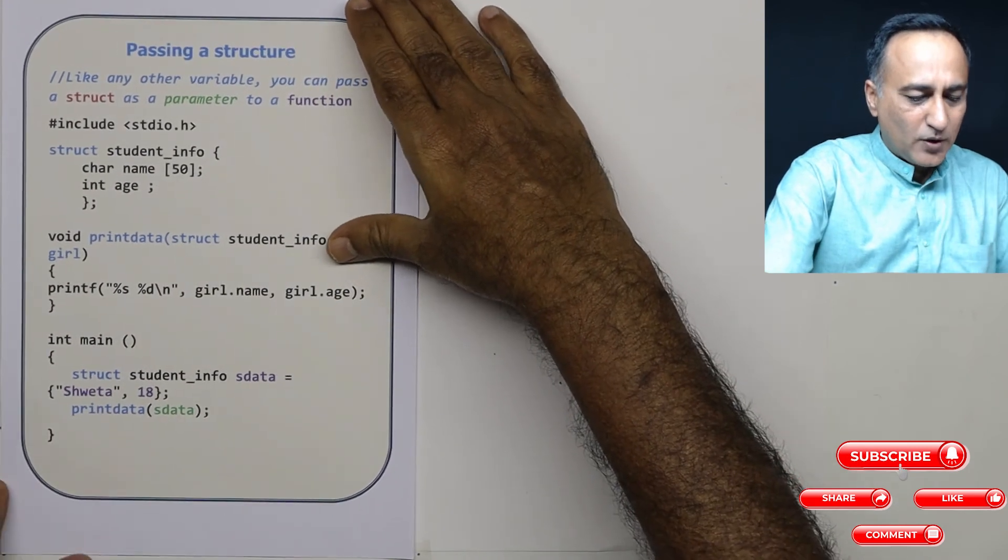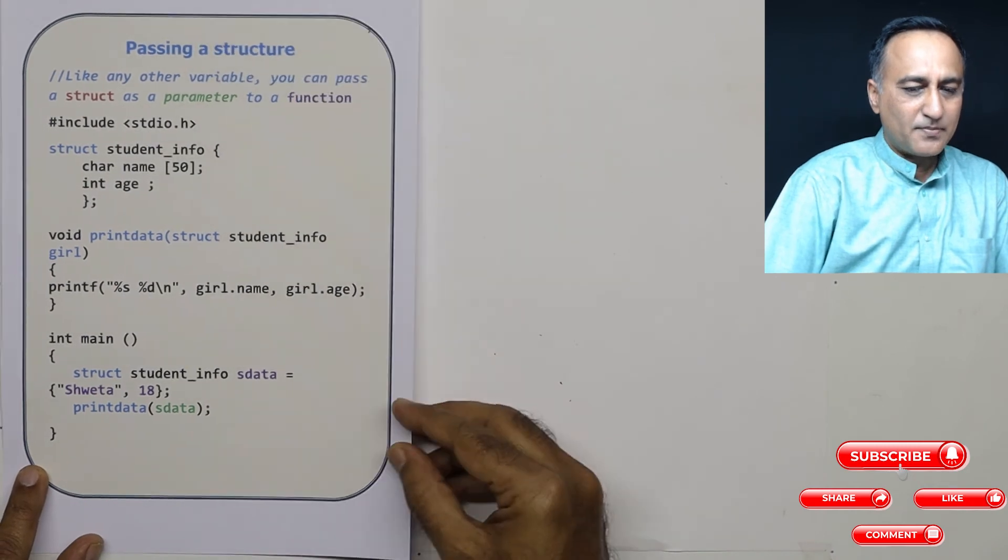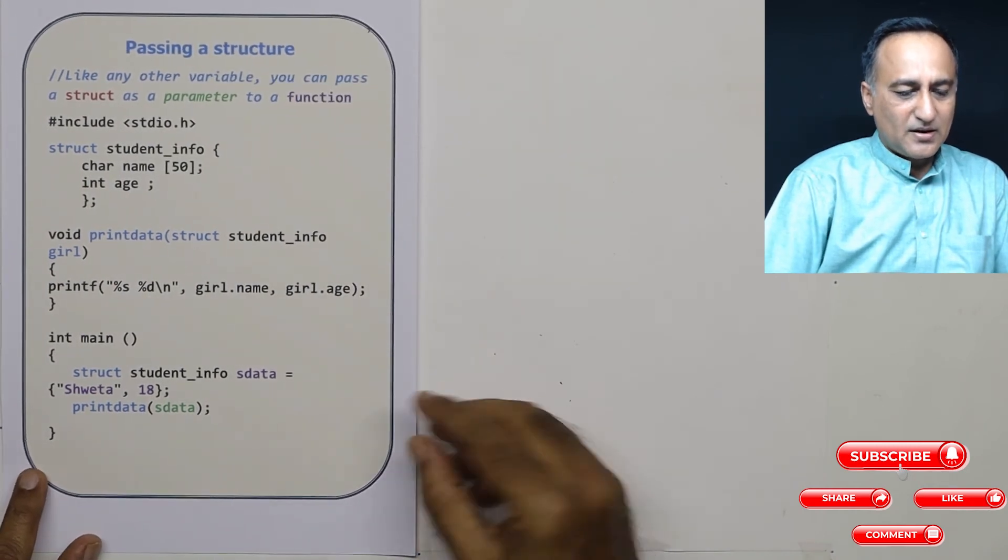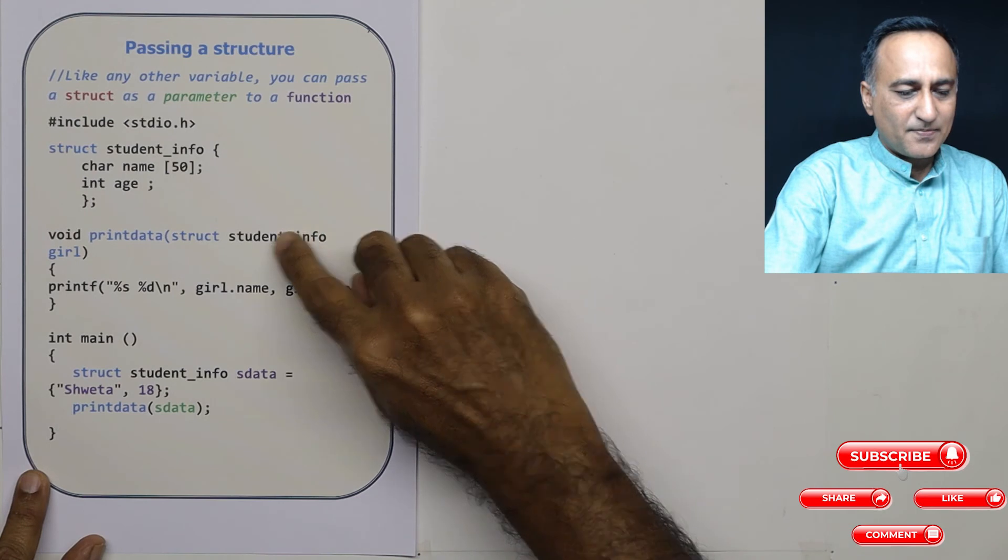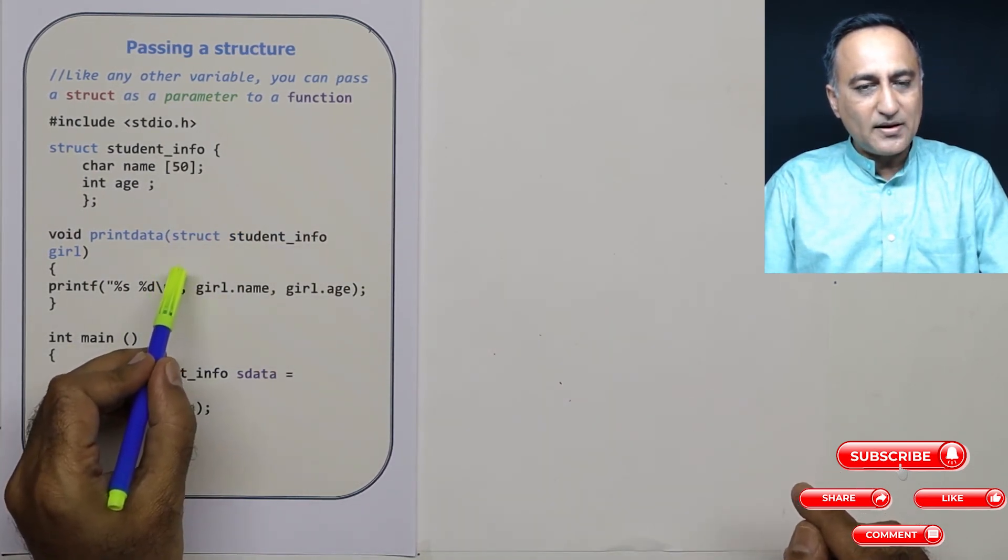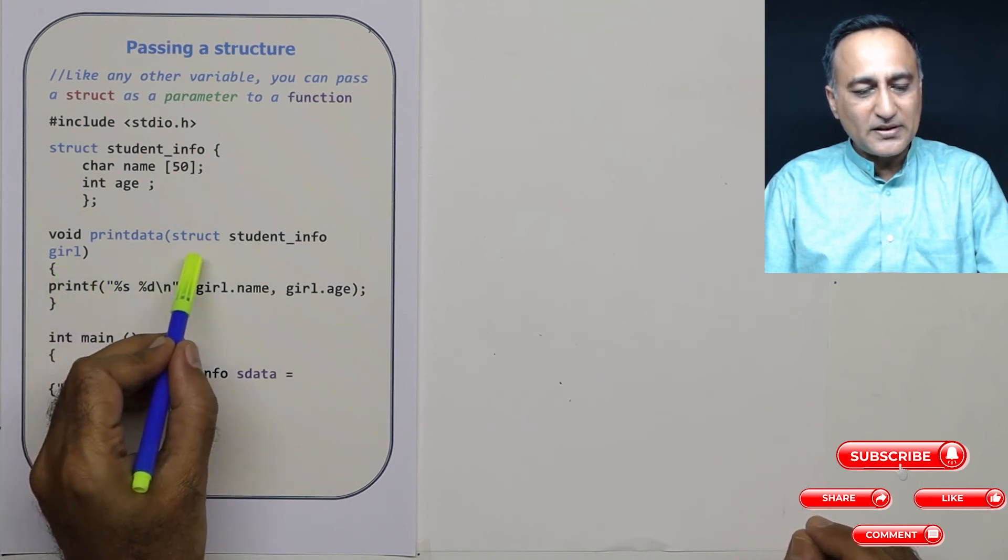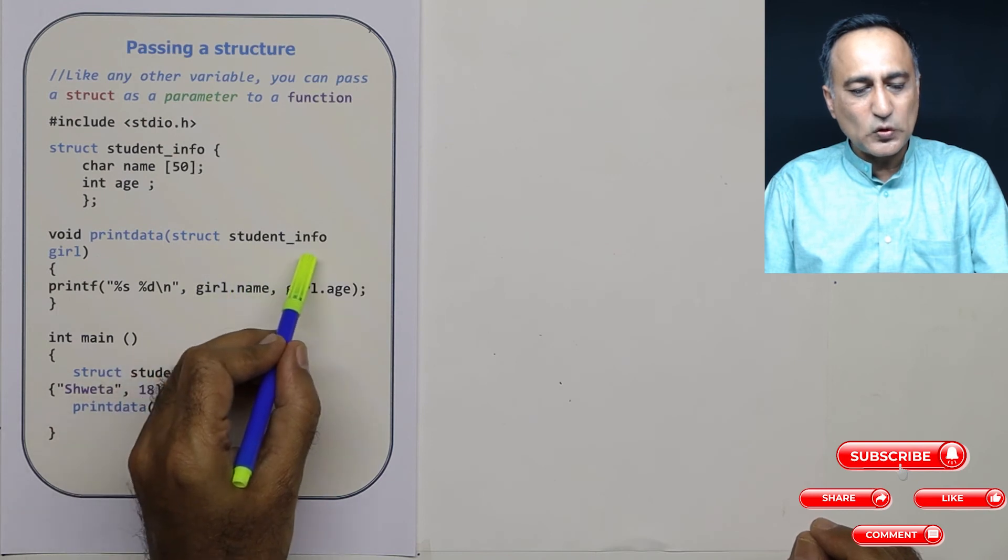Now take a look at how sdata really works. sdata is sent here in print_data. Here I need to tell the C compiler that this particular girl variable is of the type struct student_info.